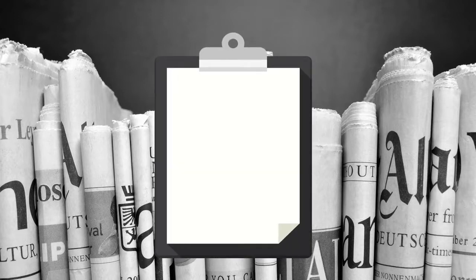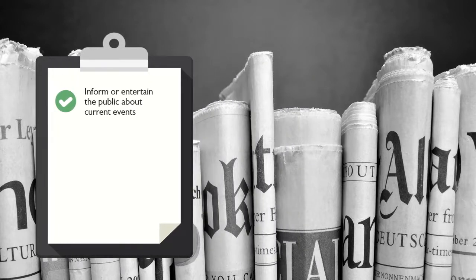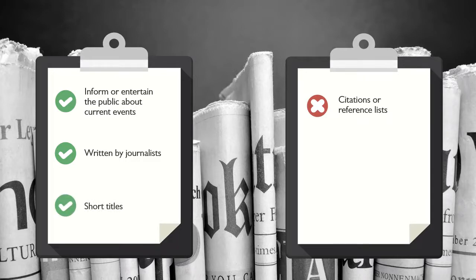Magazine articles are written to inform or entertain the general public about current events. They are written by journalists, do not contain citations or reference lists, and generally have short titles meant to grab the reader's attention. Magazine articles are not considered scholarly, peer-reviewed, or academic.